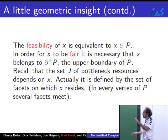In order to be fair, you have to be on the boundary. There are more conditions. It's more subtle, but it's necessary. We're looking for points on the upper boundary of P. The set J, as we said, what's bottleneck depends on x. How do you see it geometrically? It's precisely determined by the set of facets on which you reside.